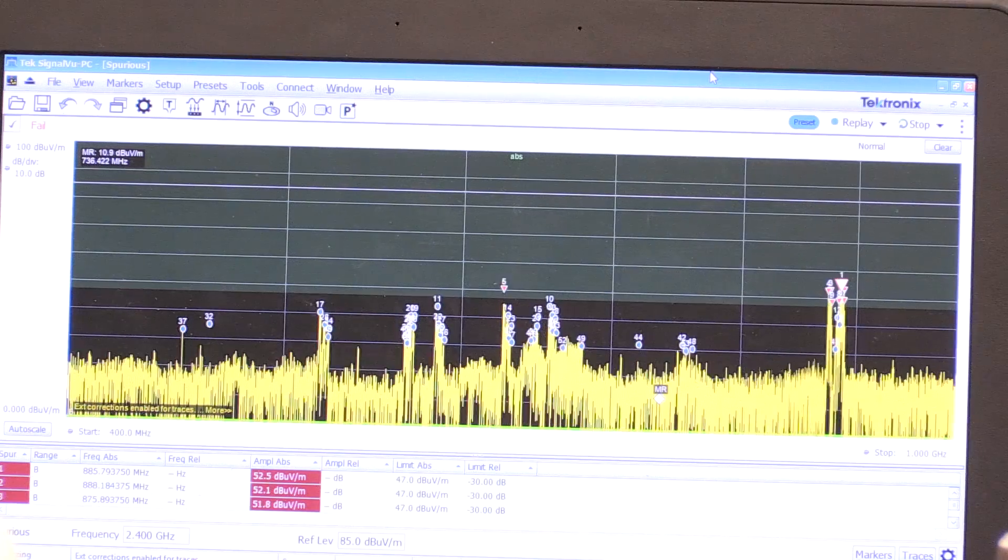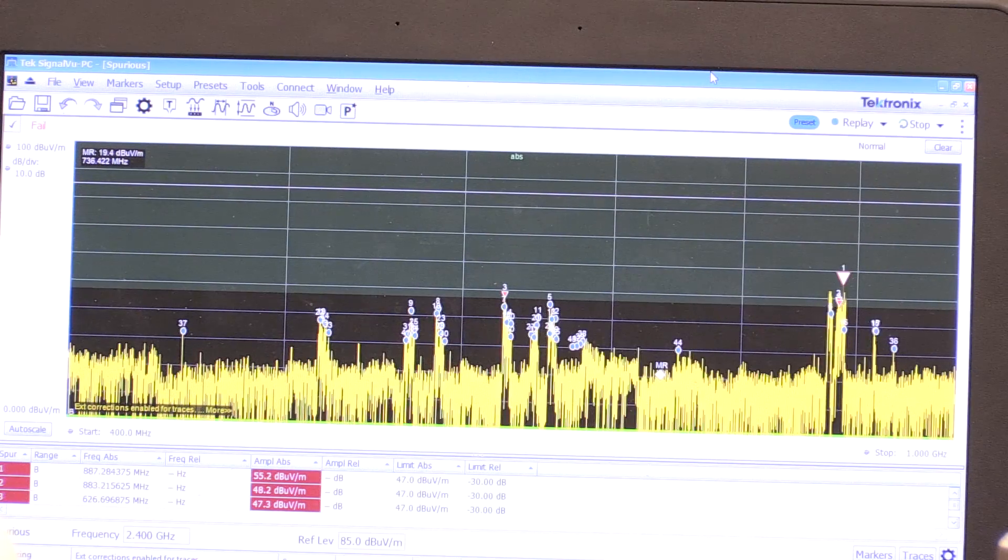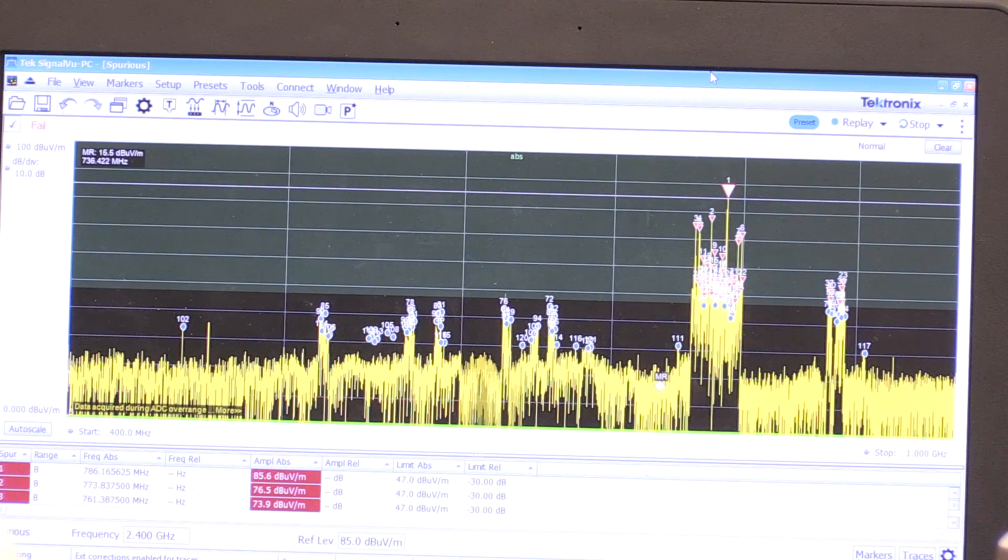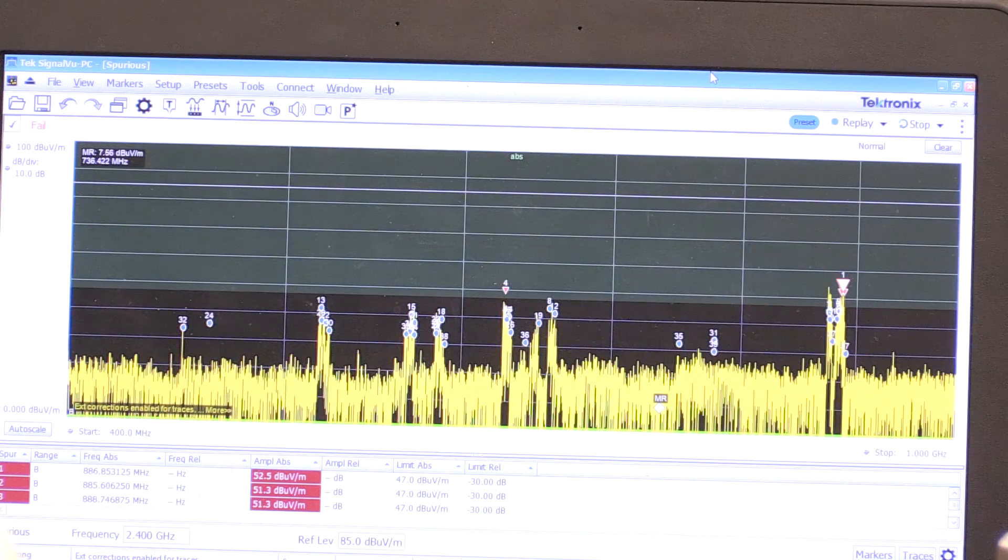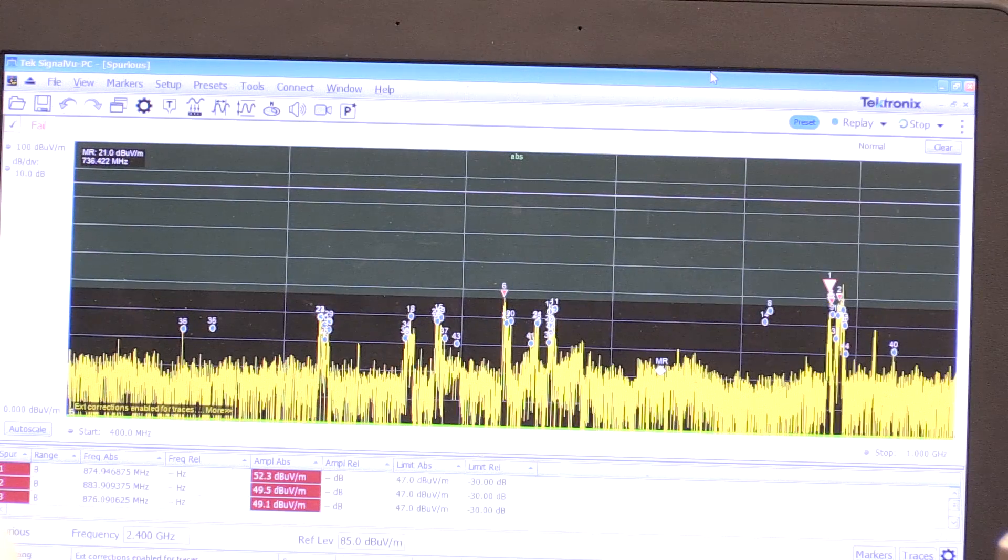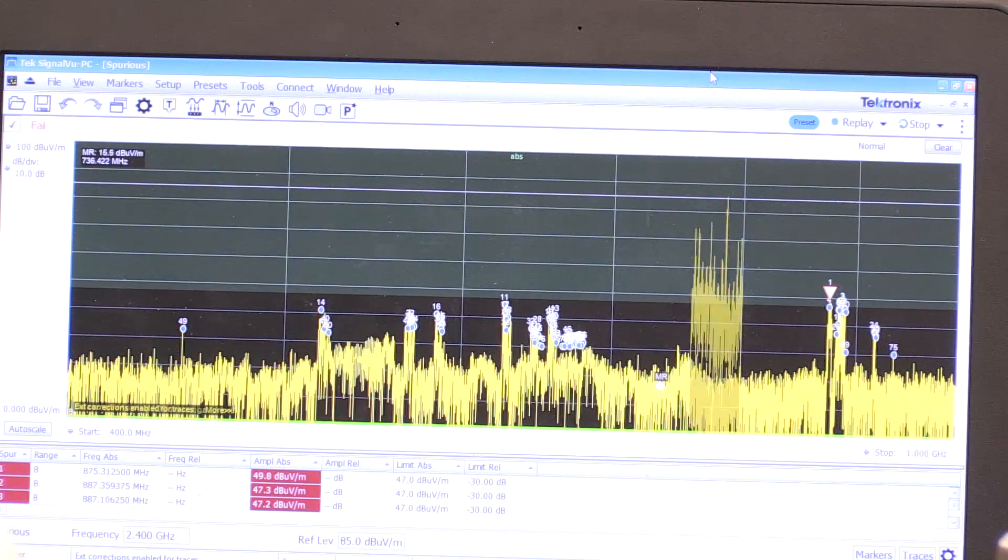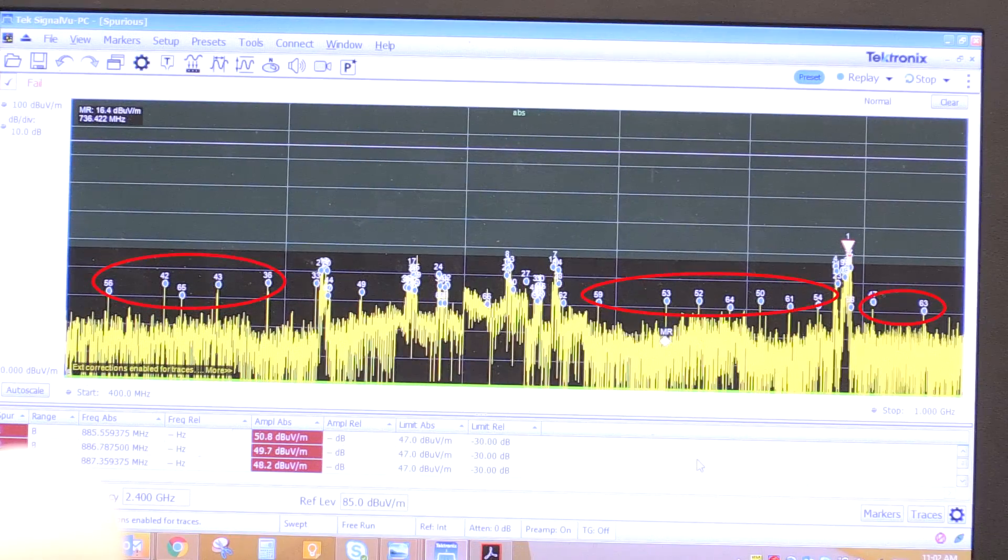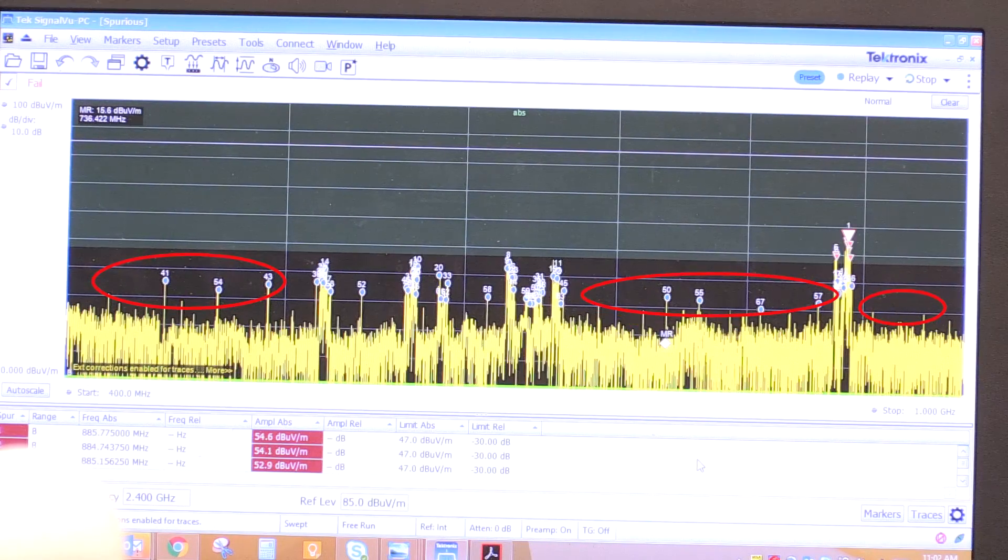That's what you would expect—an EMI chamber is going to have much better isolation against things like cellular signals and broadcast signals. However, we think the results are still correlating with what we get here in the basement compared to what we got in the chamber. So now I will power on my device under test. It goes through a small boot up sequence and you see now a series of spurious signals that are coming up that weren't present when I turned off the board.